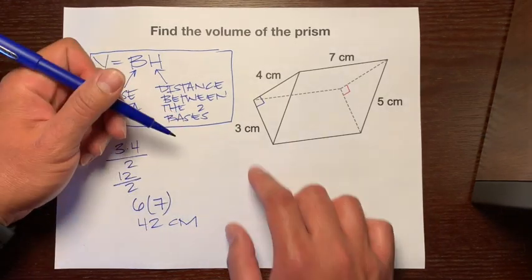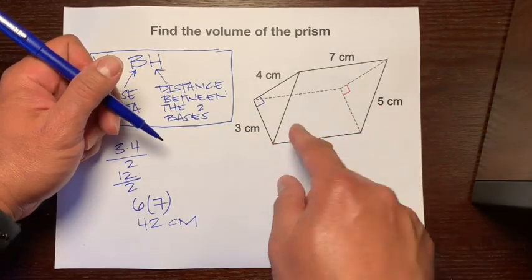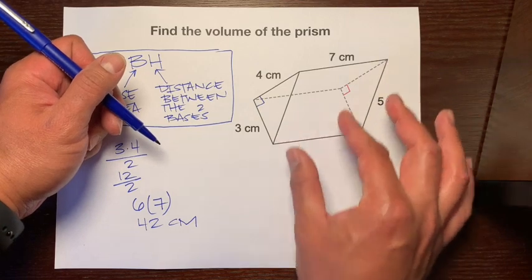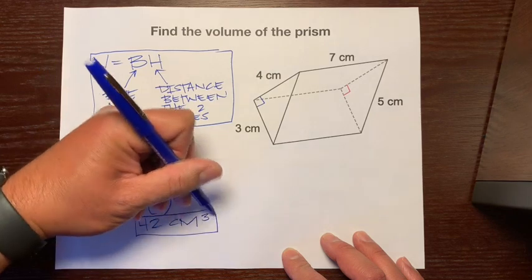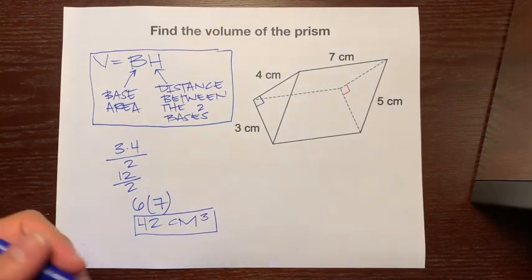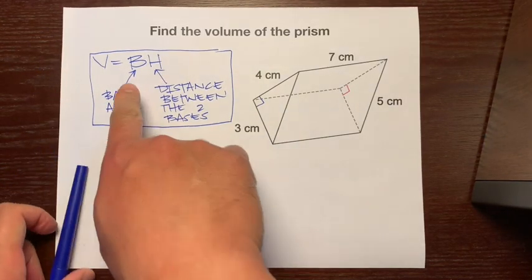That's 42 centimeters. And is it squared? No, because we're figuring out how many cubes fit inside. So it's centimeters cubed.